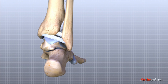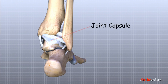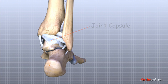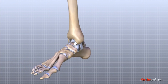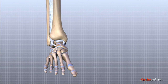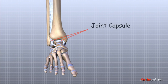The ligaments that surround the ankle joint help form part of the joint capsule. The joint capsule is a watertight sac that forms around all joints. It is made up of the ligaments around the joint and the soft tissues between the ligaments that fill in the gaps and form the sac.